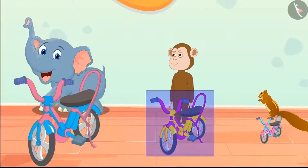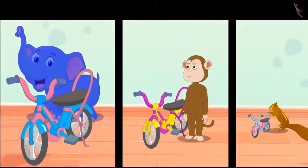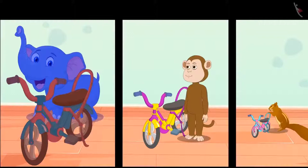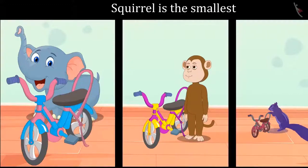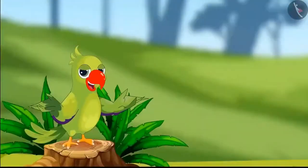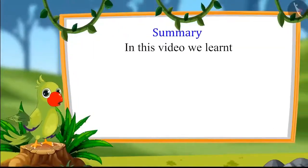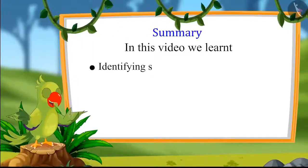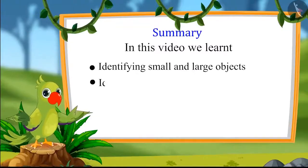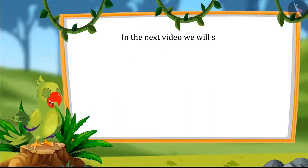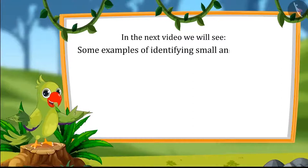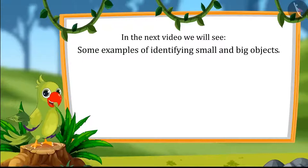And this is the monkey's bicycle. So kids, the elephant is the biggest among those three friends so he took the biggest bicycle, and the squirrel is the smallest so he has taken the shortest bicycle. In this video, we learnt identifying small and large objects and identifying the smallest and largest objects. In the next video, we will see some more examples of identifying small and big objects. Bye-bye friends.